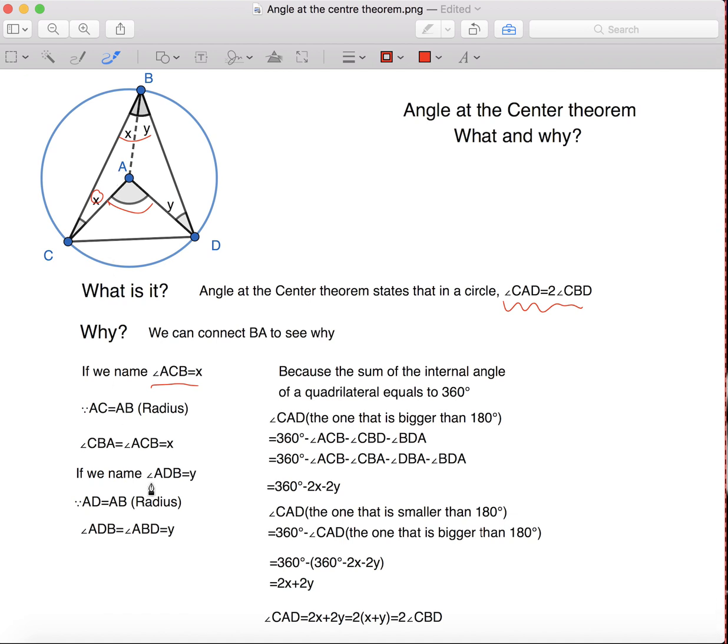If we name angle ADB equals to y, we know that AD equals to AB because both of them are radius, so angle ADB equals to angle ABD, and both of them equals to y.